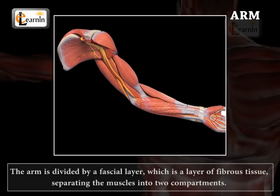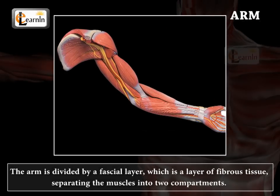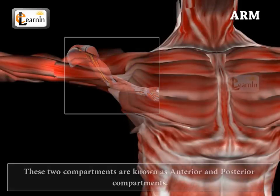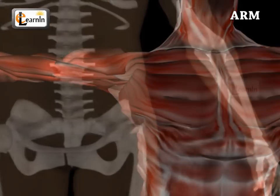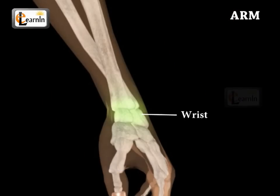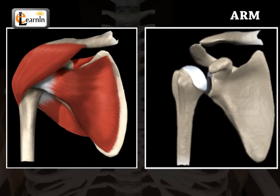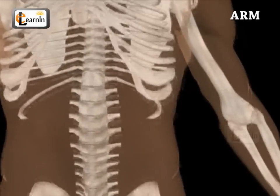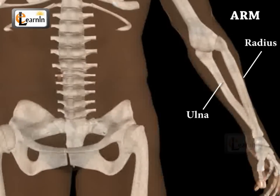The arm is divided by a fascial layer, which is a layer of fibrous tissues separating the muscles into two compartments. These two compartments are known as the anterior and posterior compartments. The ulna and the radius are joined by the wrist bones. The fascial layer joins with the scapula in the shoulder, resulting in the glenohumeral joint. This joint also connects with the ulna and the radius, which are bones of the forearm below the elbow.